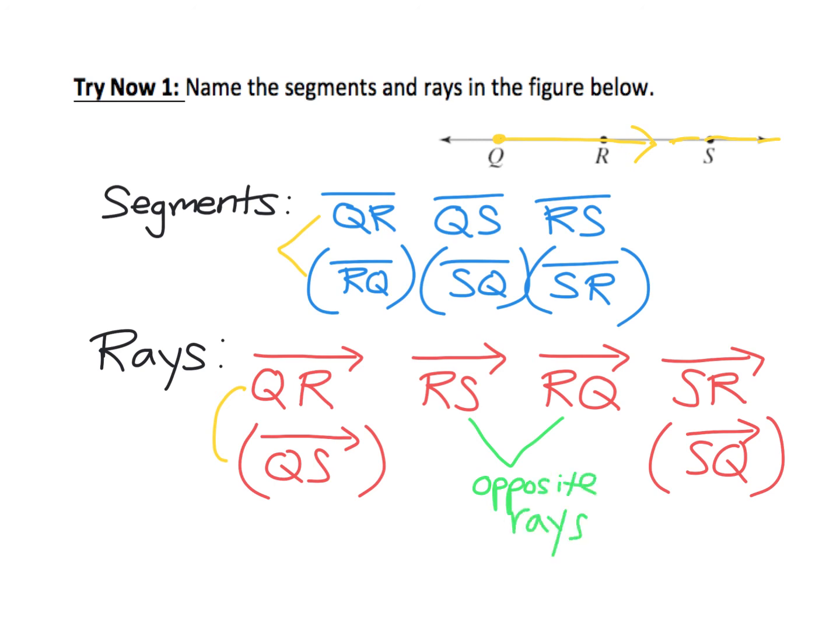And then finally, for ray SR, I started at S, my endpoint, going toward R. That could also be called ray SQ because Q is just further along that same ray.